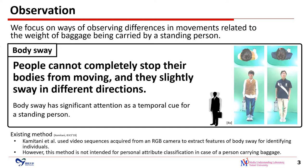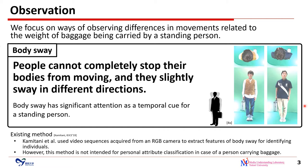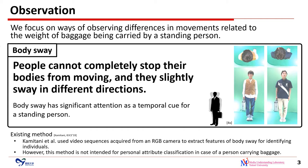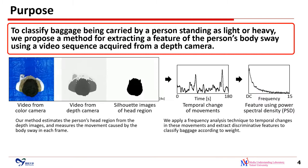We focus on differences in movement related to the weight of baggage being carried by a standing person. As we can see, people cannot completely stop their bodies from moving — they slightly sway in different directions. This slight movement is called body sway. Body sway has significant attention as a temporal cue for a standing person. An existing method used video sequences from an RGB camera to extract features of body sway for identifying individuals, however, it is not intended for personal attribute classification when a person is carrying baggage.